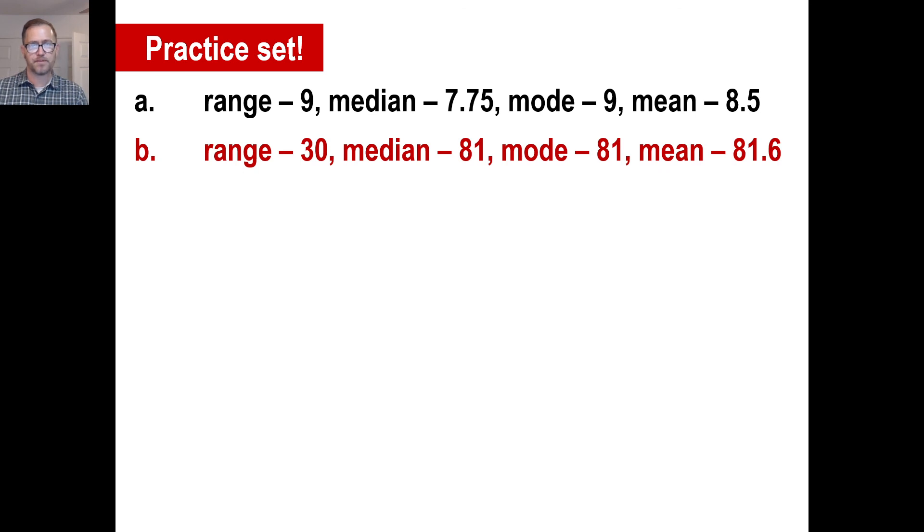All right. Let's load your practice set. So pause it. And there are three questions and I'll tell you the answers as you finish. Okay. So go ahead and do A and pause it. Okay. A, the range is 9. The median is 7.75. And you might've put 7 and 3 quarters if you did it that way. The mode is 9 and the mean is 8.5. All right. Go ahead and pause it and we'll do B. Okay. B, your range is 30. That's the lowest to the highest difference. Median is 81. That's the one right in the middle. The mode is also 81. The mean is 81.6 if you do the division. Okay. All right. Let's do C. Go ahead and pause it and do C, the last problem. Okay. C, the number you're missing is 19 because all of them together, the difference is 19 from the total. So, okay. That does it for that one. Thanks, guys.